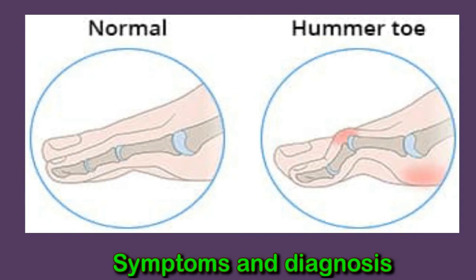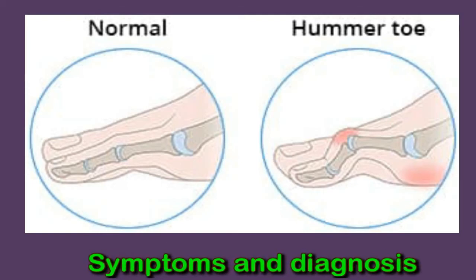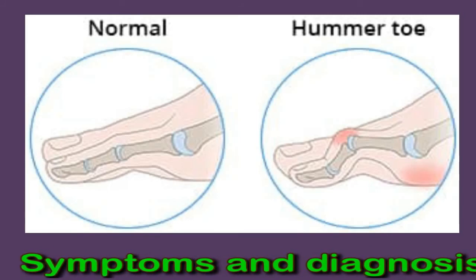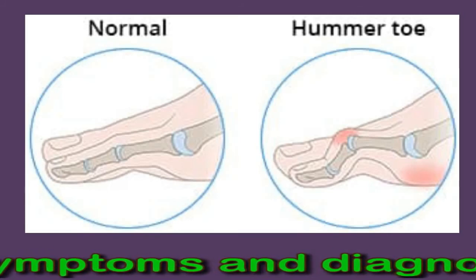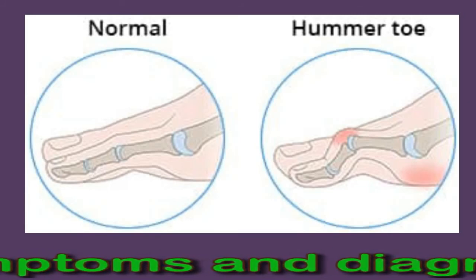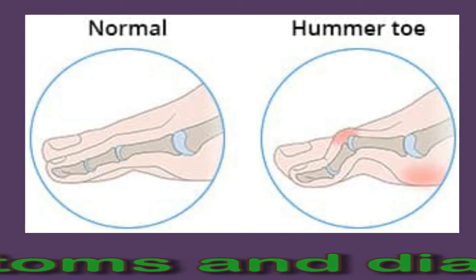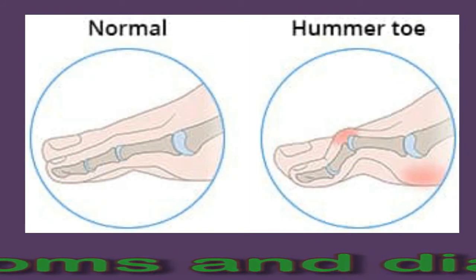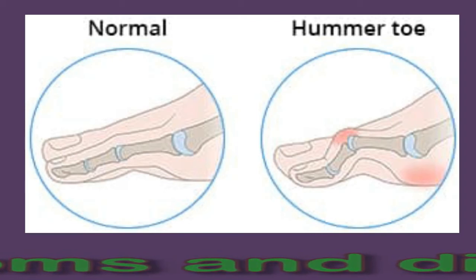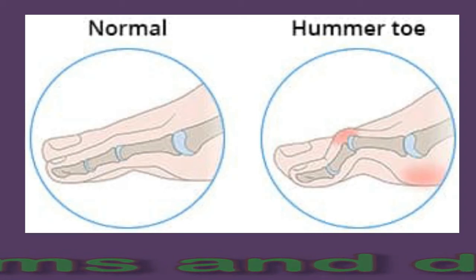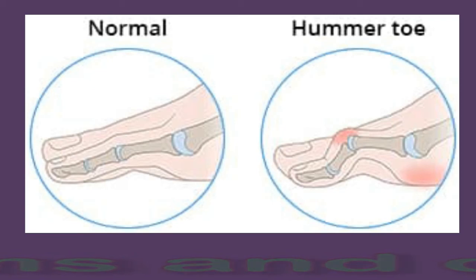Additional symptoms include inability to straighten the toe, and in severe cases, open sores may develop on the toe. A doctor normally diagnoses hammer toe during a physical exam, gently moving the foot and toe to evaluate the condition. Hammer toe is often very obvious in a foot exam; however, a doctor may order x-rays to further examine the bone structure.